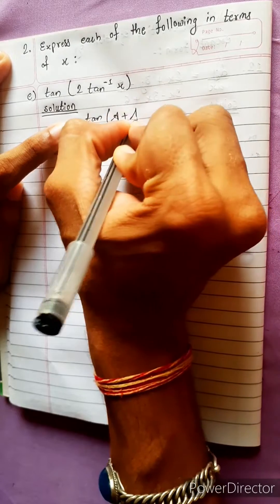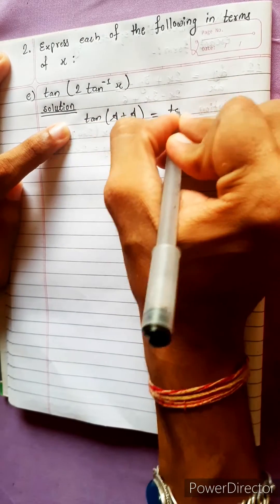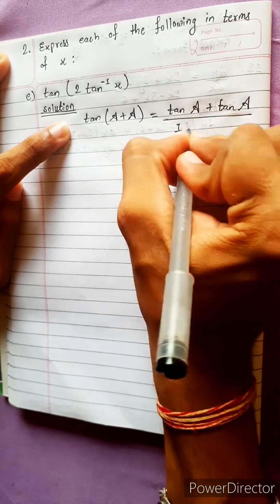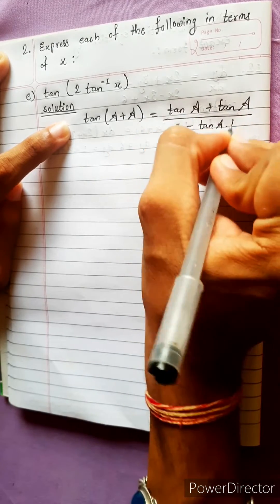tan(A + A) equals tan A plus tan A divided by 1 minus tan A into tan A.